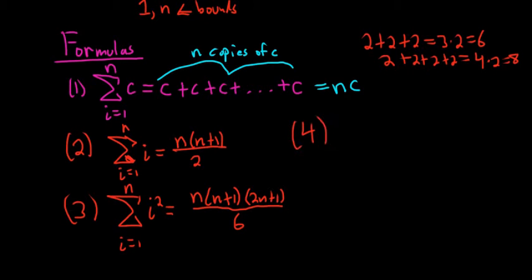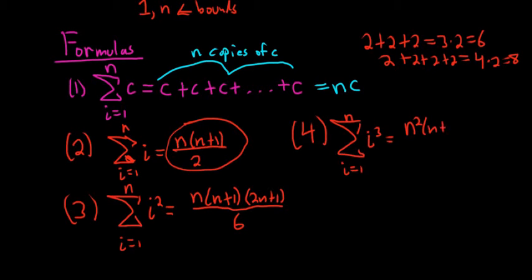And the very last one, there's a little trick to memorize it. It's the sum as i runs from 1 to n of i cubed. And the way I memorize it is you just square this one. So you square the n, you square the n plus 1, and then you square the 2 so you get 4. So these are the formulas that we'll need for area.